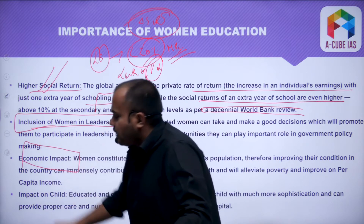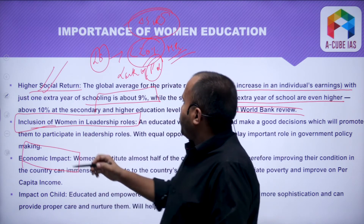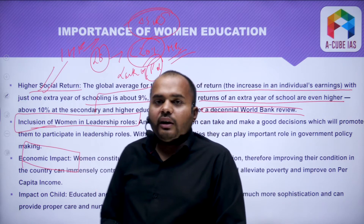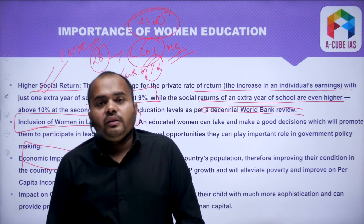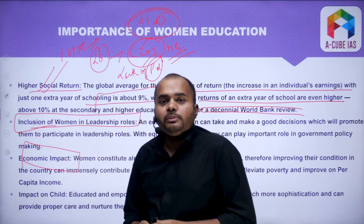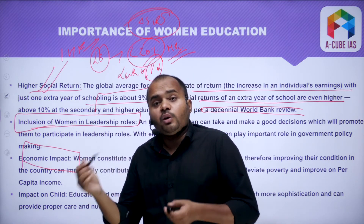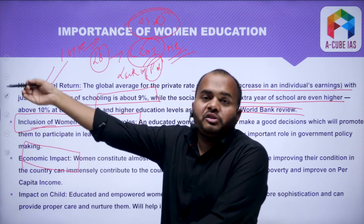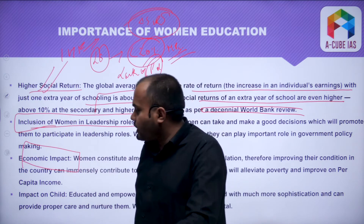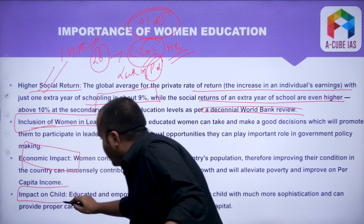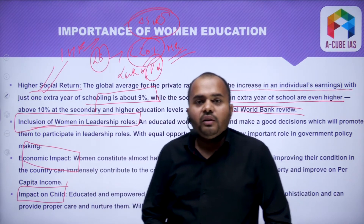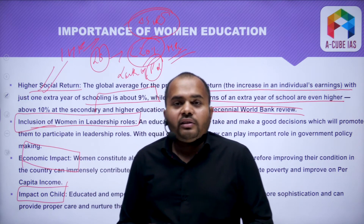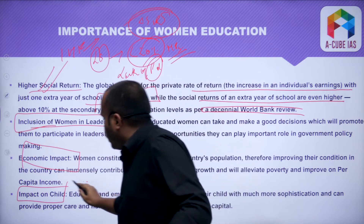On economic impact: a famous IMF report by Managing Director Christine Lagarde stated that if we equalize men's and women's economic participation, that will lead to a 25–27% increase in GDP. If we educate women, their economic participation will grow and that will drive GDP growth. On impact on the child: an educated mother will always have a more educated family, and an educated family will make the surrounding environment so conducive that the child will also be educated.